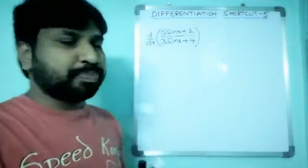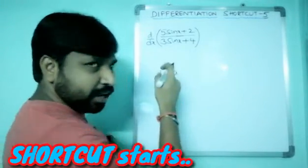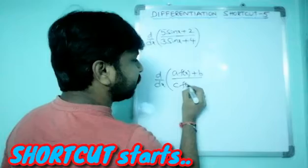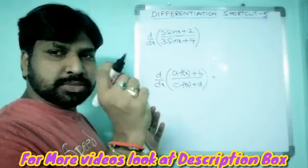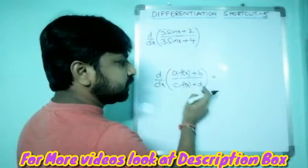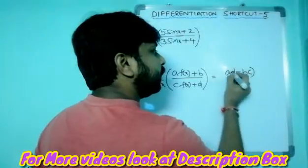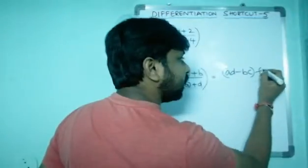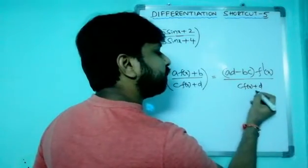Now coming to the shortcut — it's very easy. The shortcut formation: d/dx of [a·f(x) + b] / [c·f(x) + d]. Same as shortcut 4 formation, just a small modification. d/dx of [a·f(x) + b] / [c·f(x) + d] equals (ad − bc) into f'(x), divided by [c·f(x) + d] whole squared.